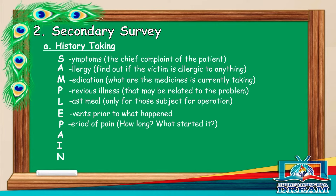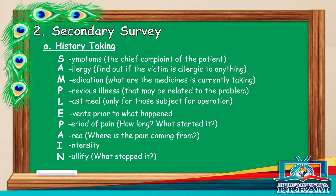E or events prior to what happened. Then PAIN: P stands for period of pain — how long, when did it start? A stands for area — where is the pain coming from? I stands for intensity. N stands for nullify — what stopped it?